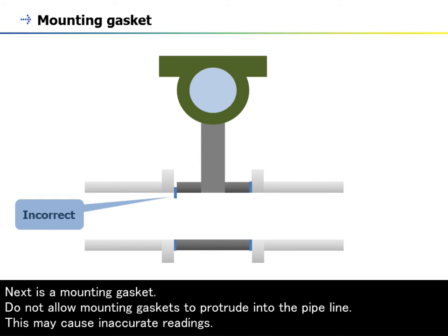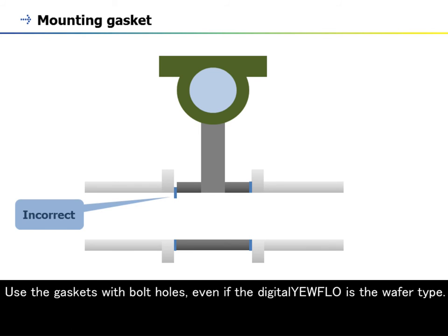Next is a mounting gasket. Do not allow mounting gaskets to protrude into the pipeline, as this may cause inaccurate readings. Use the gaskets with bolt holes, even if the digital yearflow is the wafer type.